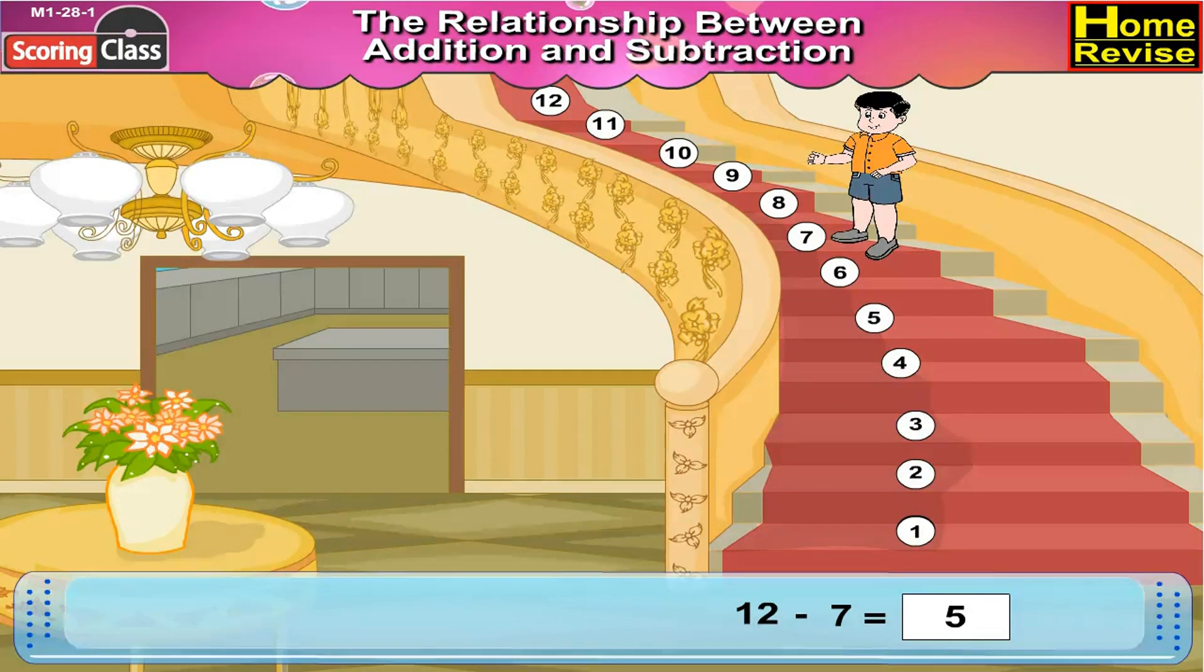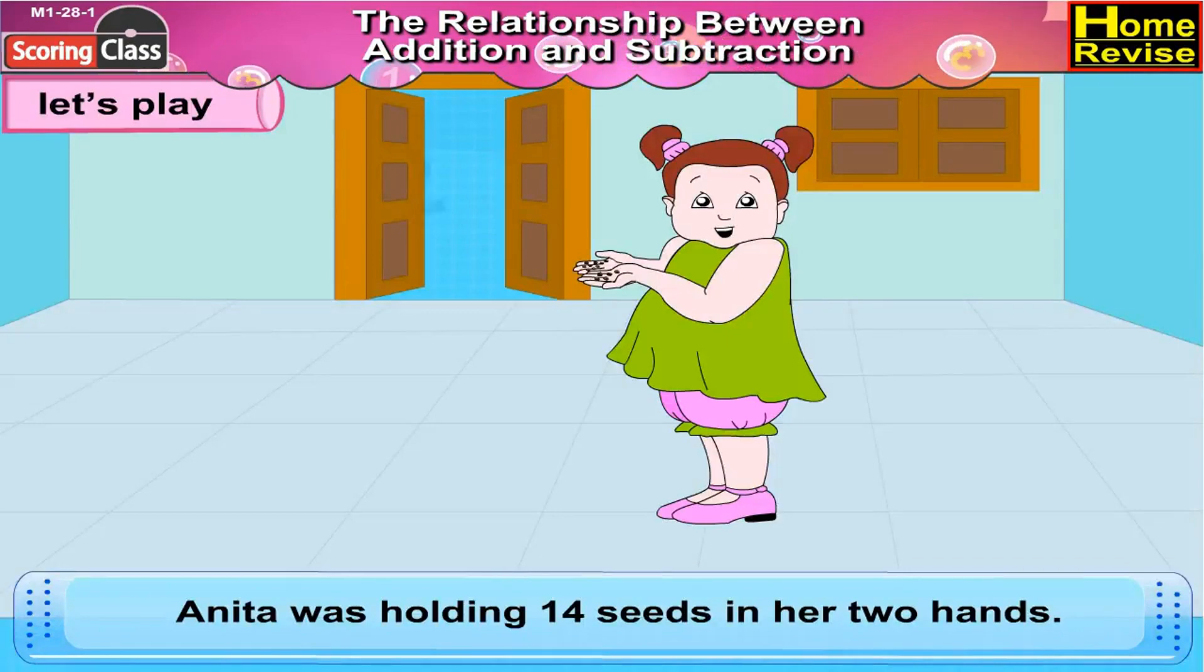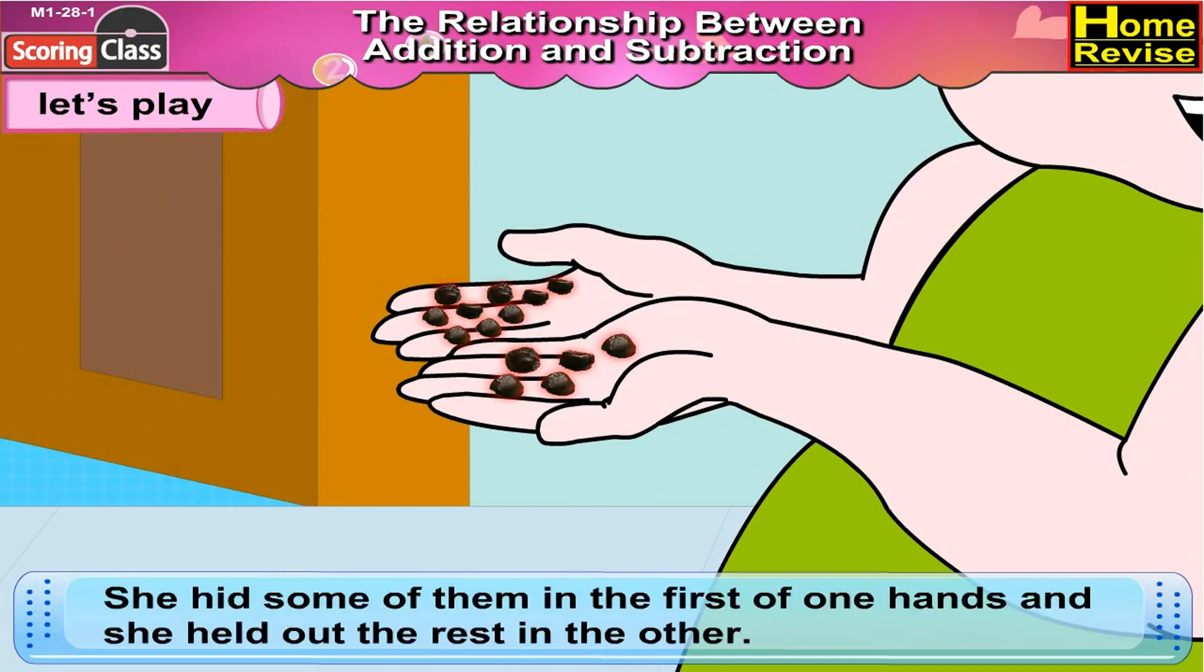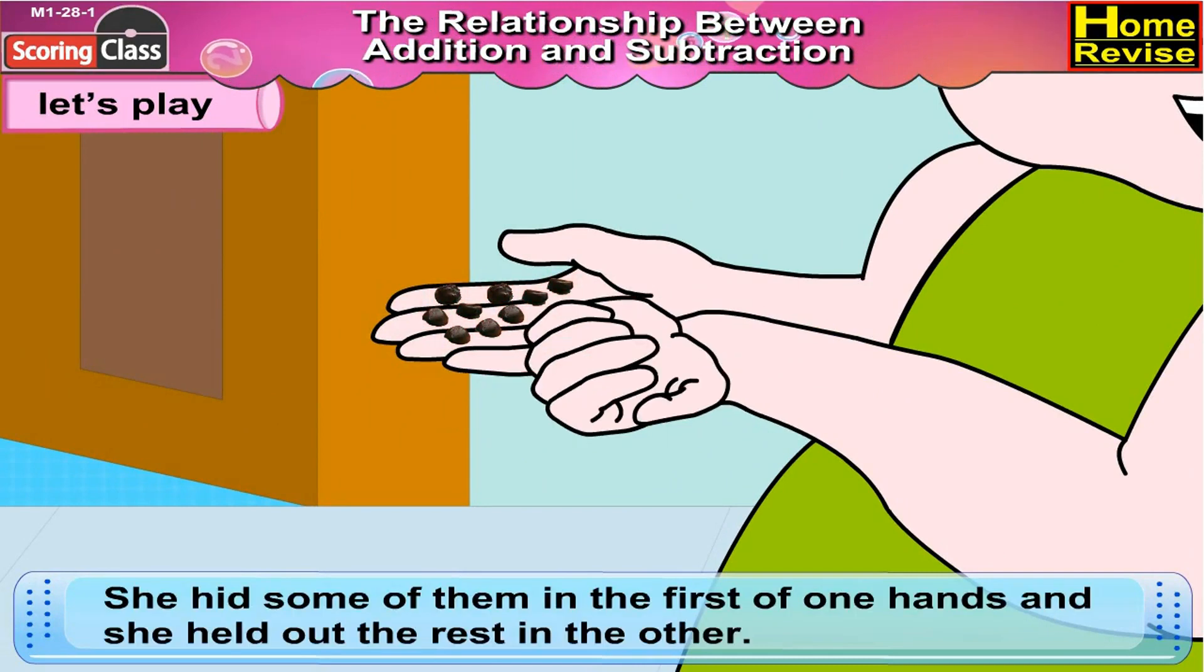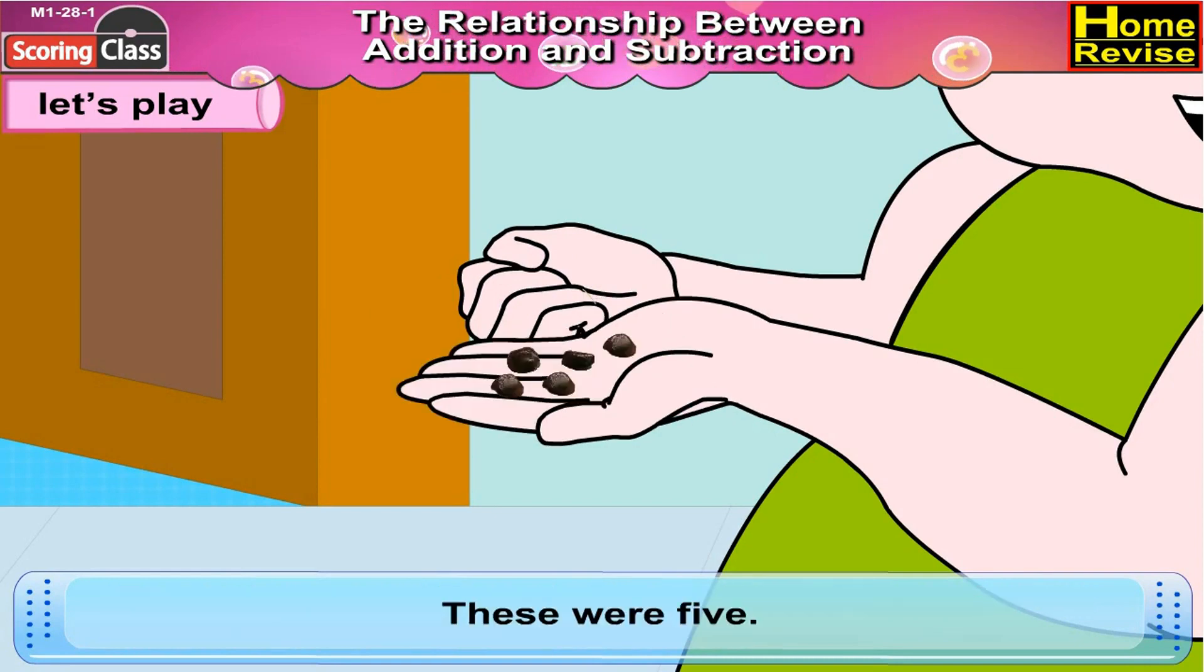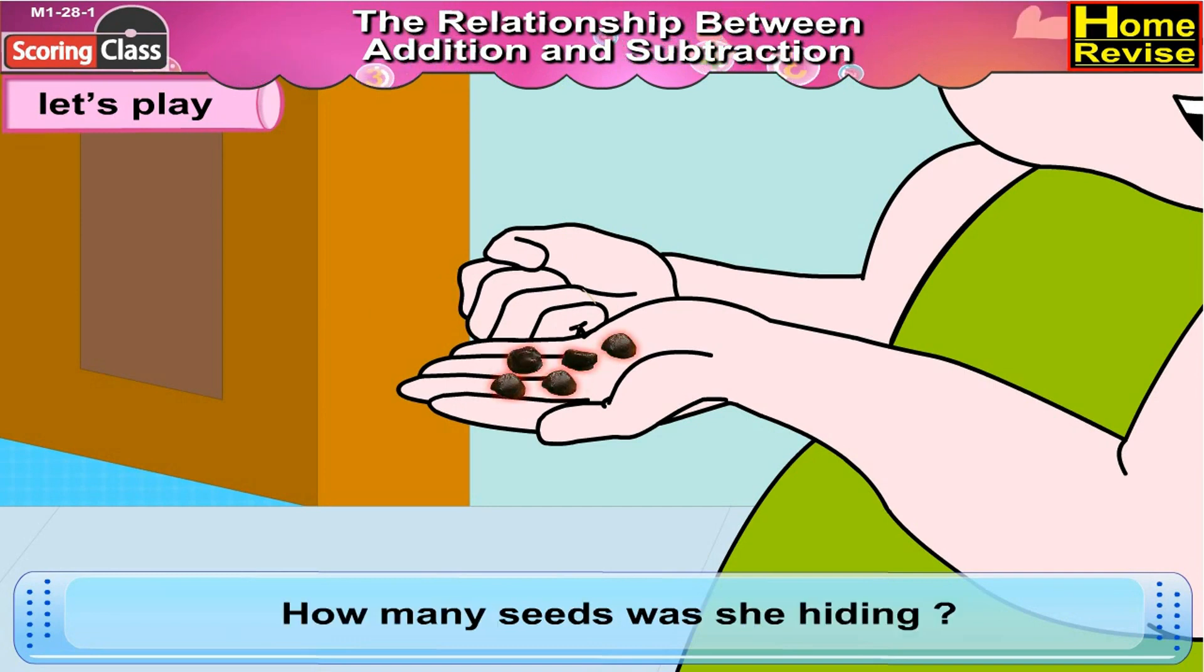Now let us play a game. Anita was holding 14 seeds in her two hands. She hid some of them in the fist of one hand. And she held out the rest in the other. These were 5. So how many seeds was she hiding?